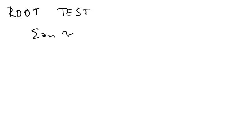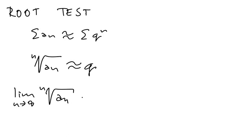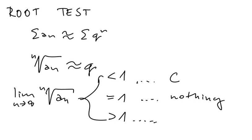And so what does it say? So suppose that the sum of AN would be roughly Q to N. Then if you would take a look at the N root of AN, then it would be roughly Q. So we will take a look at this limit. And this thing here can have different values. It's exactly as before. If it's smaller than one, then it converges. If it's equal one, nothing, we know nothing. And if it's larger than one, then it diverges.